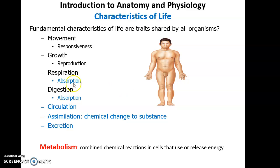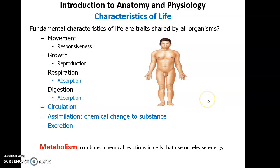Absorbing oxygen into the bloodstream is important because blood allows for circulation — the movement of materials throughout the body, getting nutrients and oxygen where they need to go, and getting rid of wastes and carbon dioxide.